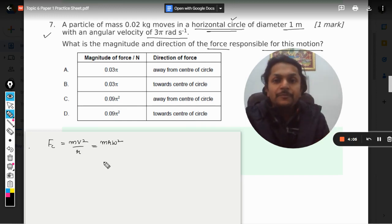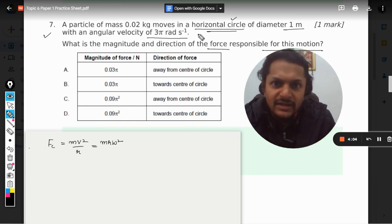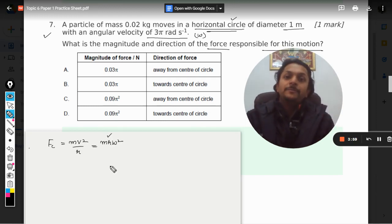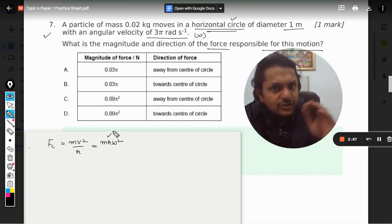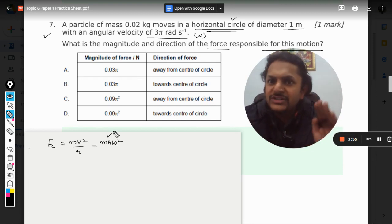You can use either of the formula. In our question omega is given, so we will be preferring mr omega square. And the direction of the centripetal force is always towards the center, and this is what they are asking.